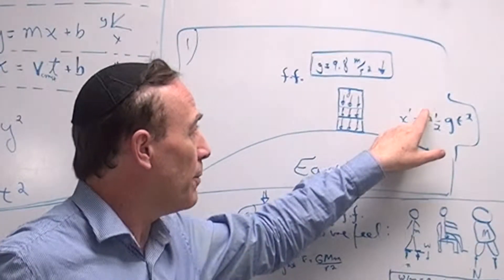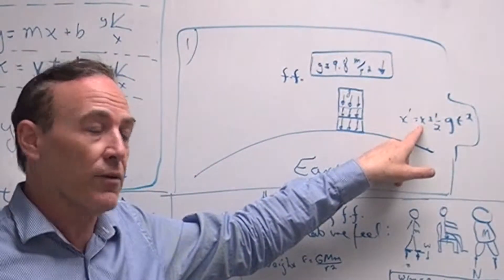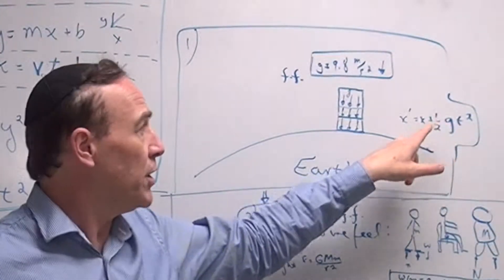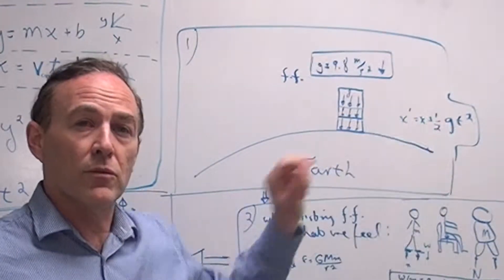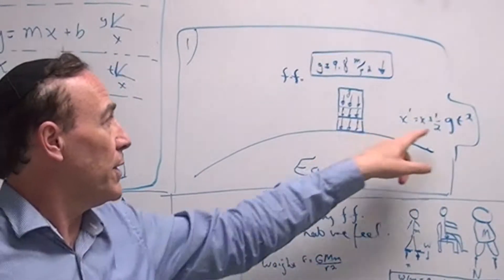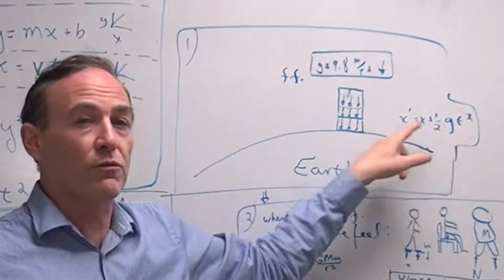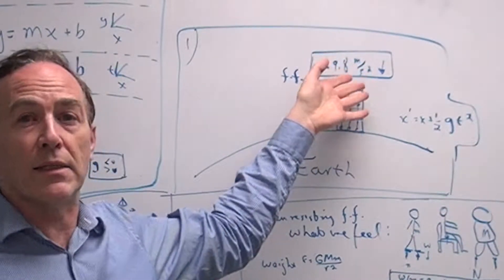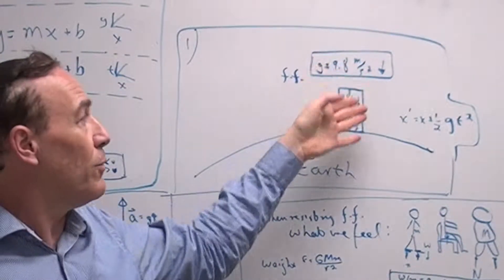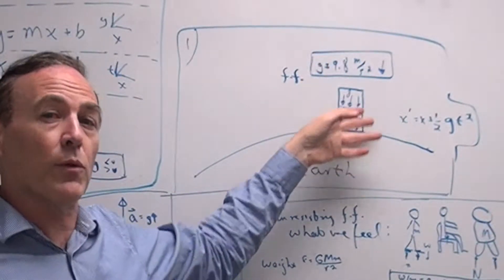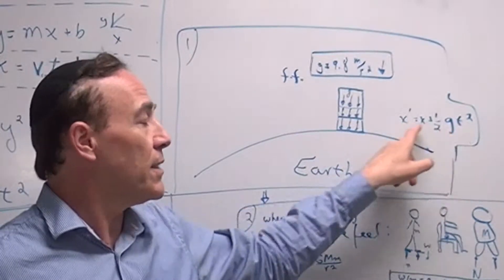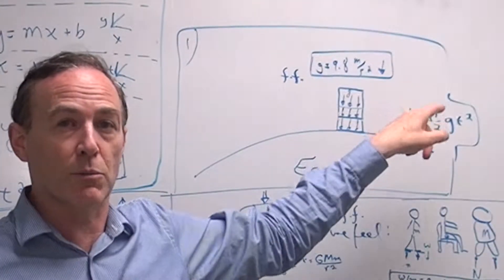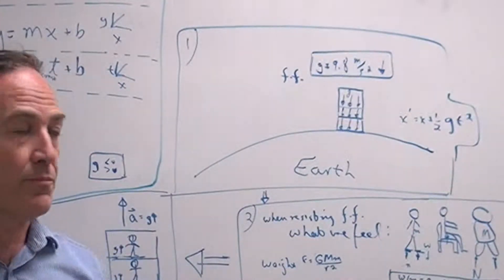x prime is equal to the x of the falling frame, plus or minus — depending on how you define it — g times t squared. It's simply the acceleration formula. So if one says that it's standing still and the other one says it's accelerating, the relationship between the two is given by x plus or minus half g t squared.